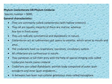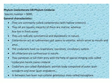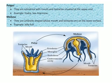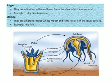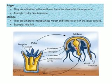Cnidarians are diploblastic. Between the two layers — ectoderm and endoderm — a non-cellular gelatinous mass is present, known as mesoglea. The two forms of cnidarians are polyps and medusa. Polyps are cylindrical with mouth and tentacles at the top; examples are hydra and sea anemone. Medusa are umbrella-shaped with mouth and tentacles on the lower surface; examples are jellyfish. These forms are shown in the figure.